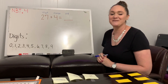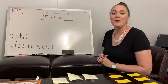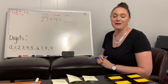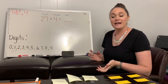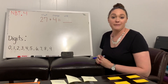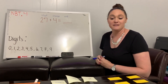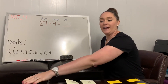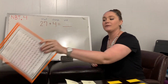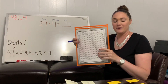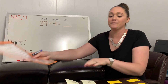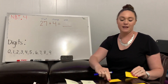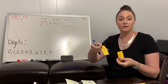Hi there! Thanks for joining me today. We're here to talk about adding a two-digit number and a one-digit number. When I start math, I like to gather all of my tools together so that I have what I need right in front of me. Today, the tools we're going to need include a 120 chart, your math packet, a pencil, and your digit cards 0 through 9.